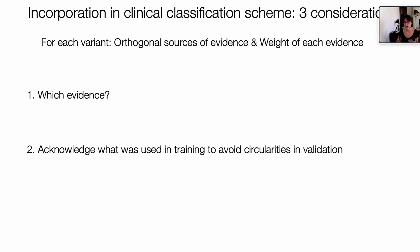Secondly, the weight that the evidence will take goes hand in hand with how robust and systematic the validation can be done. It's very important to also acknowledge what data and what evidence was used in training to avoid circularities in the validation.